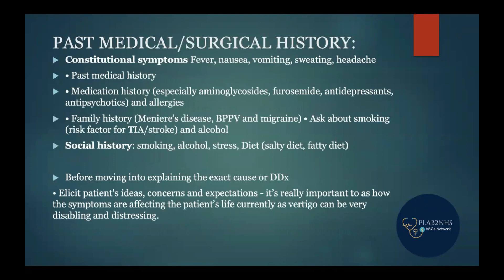In past medical history, specifically ask about constitutional symptoms as cancer can cause vertigo. In medication history, ask specifically about aminoglycosides, furosemide, and antidepressants as all three can cause vertigo. In family history, ask about BPPV, migraine, or Meniere's. In social history, ask about smoking, alcohol, and stress as all can cause vertigo. Always elicit ideas, concerns, and expectations - this is a key checkbox for examiners.